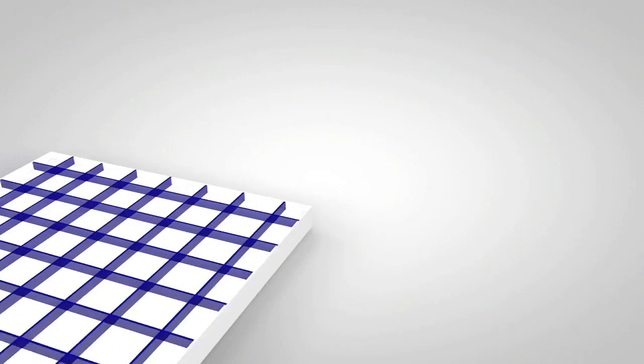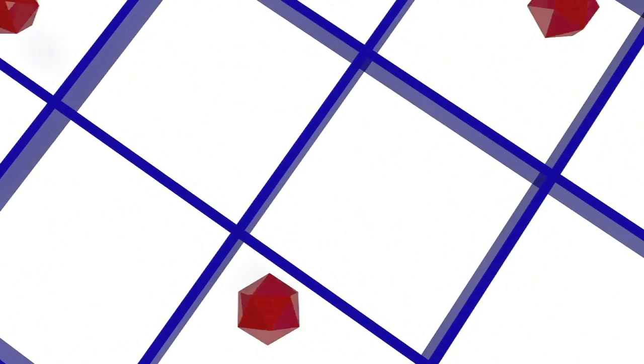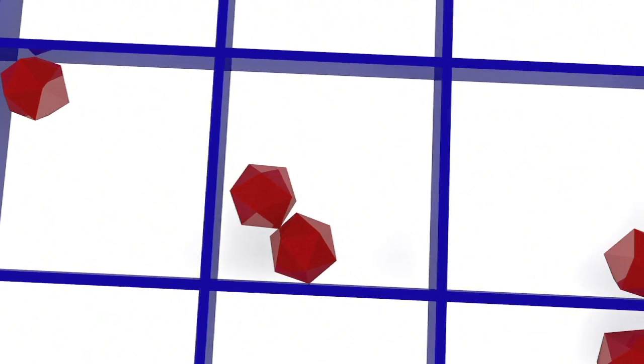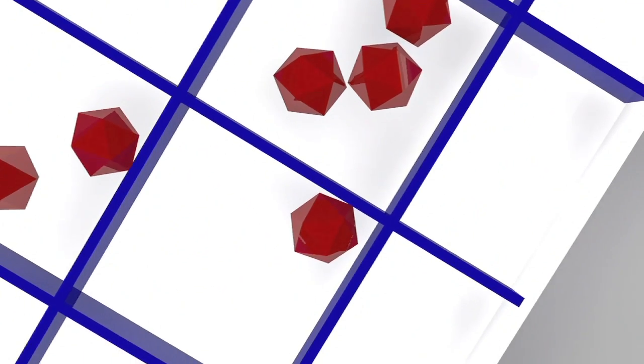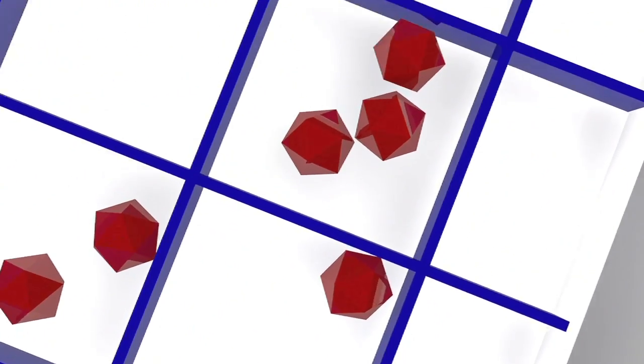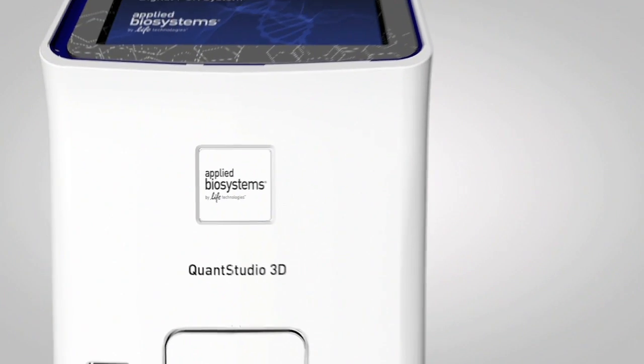To understand the absolute count, it is necessary to understand that some reaction wells will receive more than one target molecule during partitioning. Uncorrected, this can lead to undercounting, as only positive reactions are counted. This mathematical issue may seem daunting, but fortunately a digital PCR instrument, such as the QuantStudio 3D from Life Technologies, figures this out automatically with the use of standard statistics.